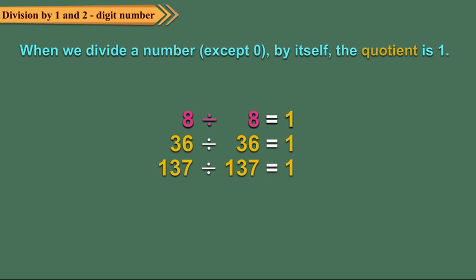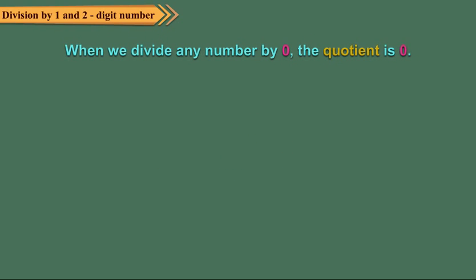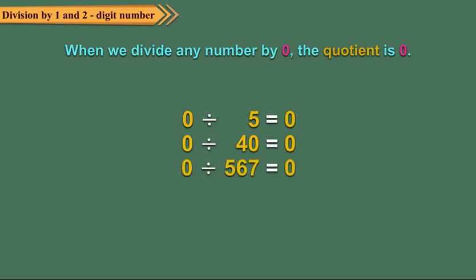On dividing 8 by 8, or 36 by 36, or 137 by 137 — in each case the quotient is 1. When we divide 0 by any number, the quotient is 0. Division by 0 is not allowed.